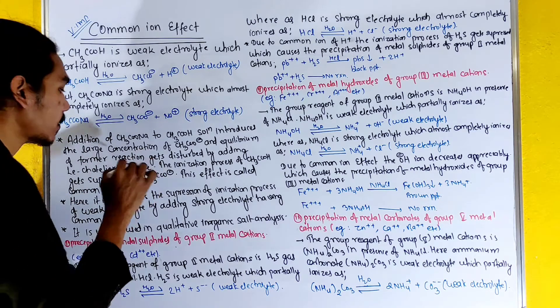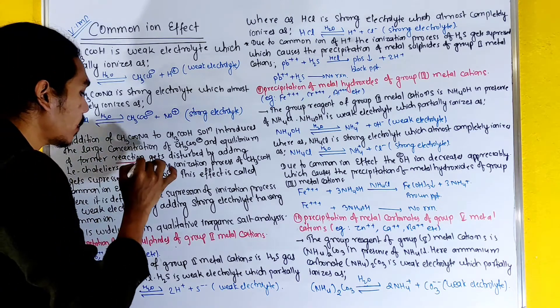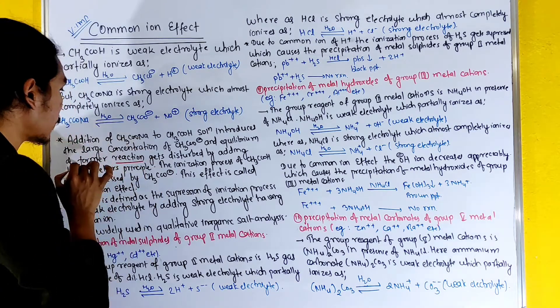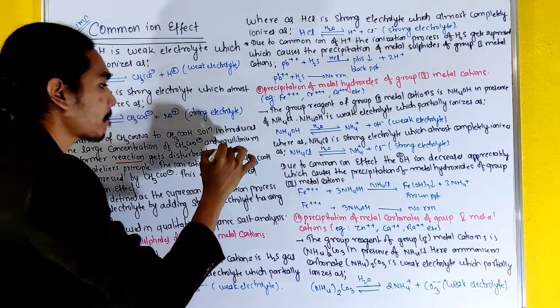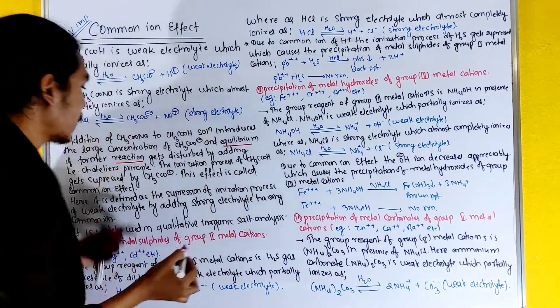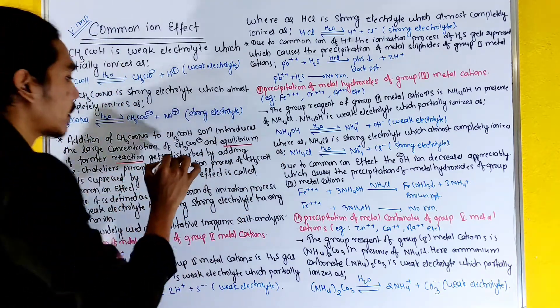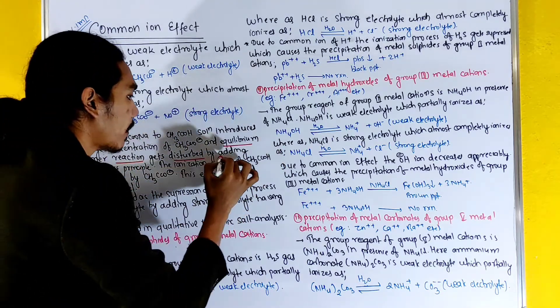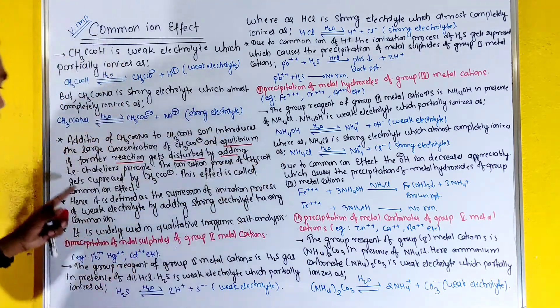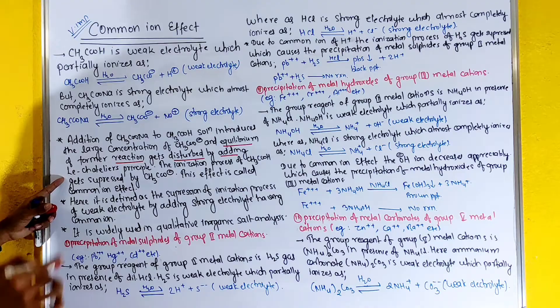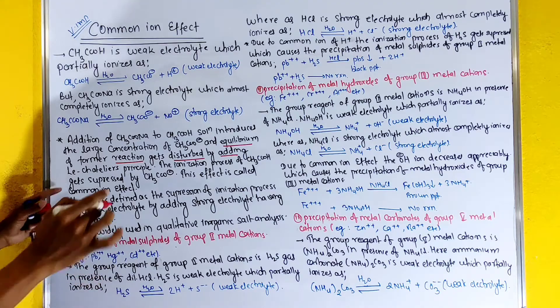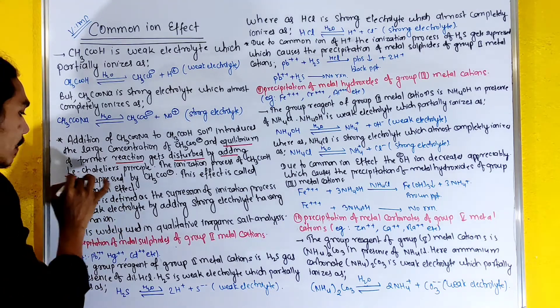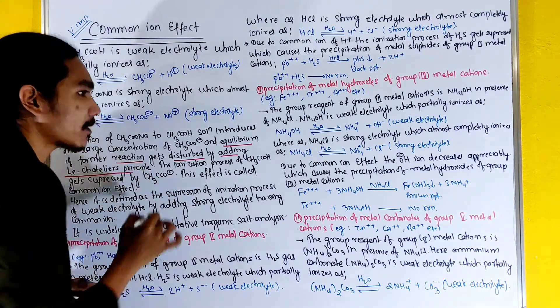How do we know how the equilibrium reaction is disturbed? It gets disturbed by applying Le Chatelier's principle. According to Le Chatelier's principle, the system will shift to re-establish equilibrium. We will apply the concept of chemical equilibrium here.